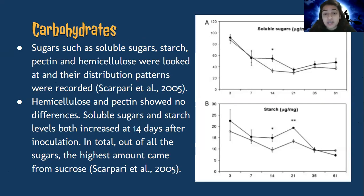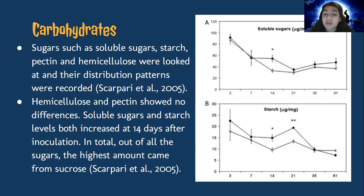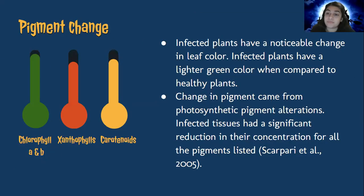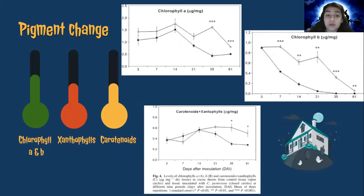Changes in sugar and the increase in ethylene levels lead to the third change: pigment concentration. High levels of sugar can reduce the need for photosynthesis, which in turn reduces the need for pigment synthesis, and high levels of ethylene are found to degrade chlorophyll. Infected plants have a lighter green color compared to healthy plants. This was discovered through analysis of chlorophylls A and B and carotenoids and xanthophylls, and it was determined that the change in pigment came from photosynthetic pigment alterations. Chlorophyll A and B started to drop down, while carotenoids and xanthophylls began dropping only after 14 days.